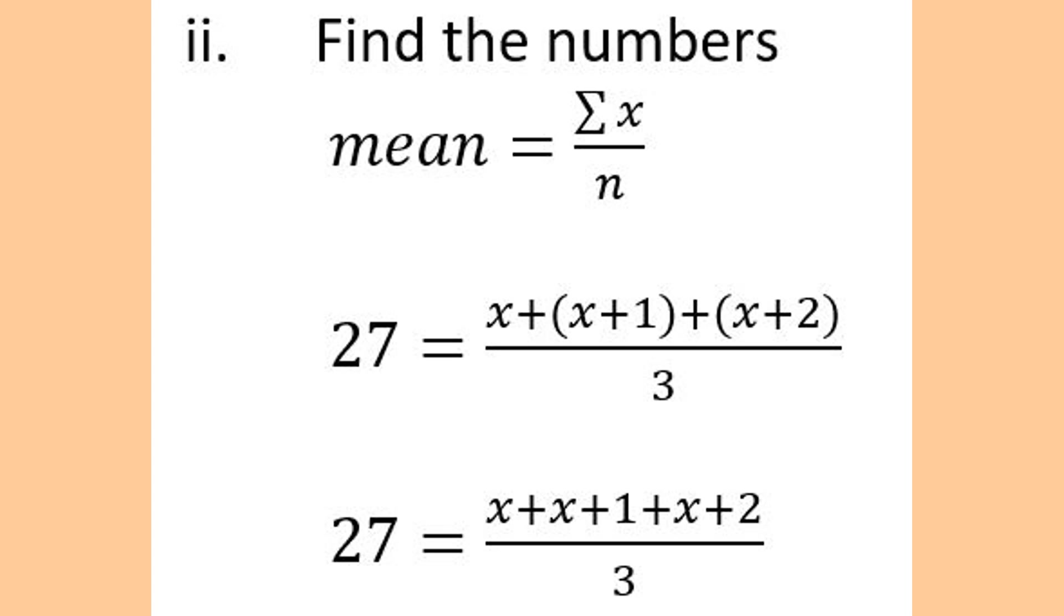Our mean is 27. This 27 equals x plus x plus 1 plus x plus 2, these three consecutive numbers, everything divided by 3.